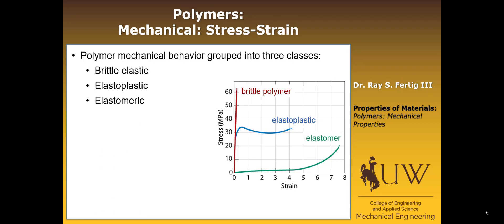And then finally, there's elastomeric, which is actually a non-linear elastic material where it's a relatively low modulus until you get to very high strains, and then it finally fails.